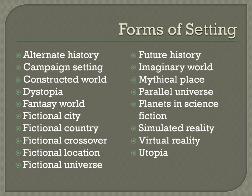Most stories occur in a real-world setting in the past or present time. Here are other forms of setting that may be used in fictional stories: alternate history, campaign setting, constructed world, dystopia, a fantasy world, a fictional city, a fictional country, a fictional crossover, fictional location, fictional universe, future history, imaginary world, mythical place, parallel universe, planets, science fiction, simulated reality, virtual reality, and utopia.